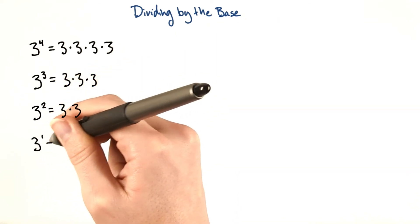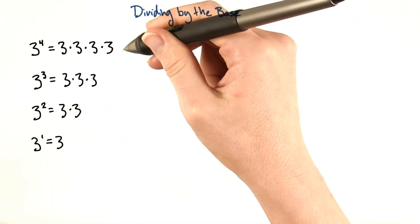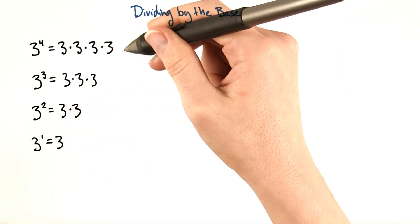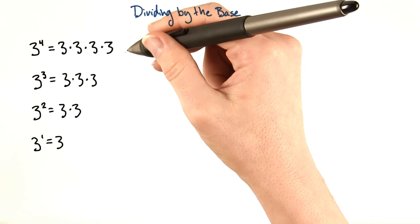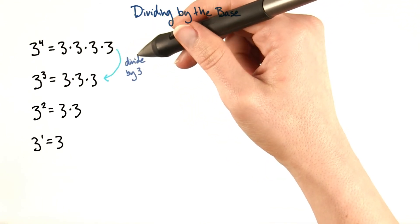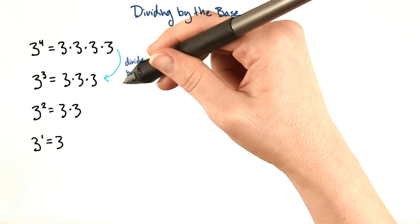So 3 to the 1 is just 3. Every time we go down a power, we are multiplying the base by itself one less time. We are essentially dividing by the base every time we go down a power.